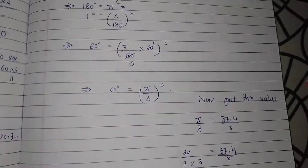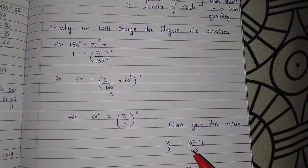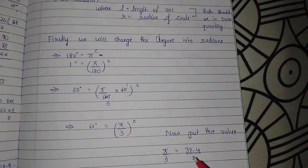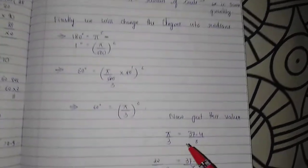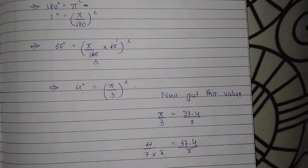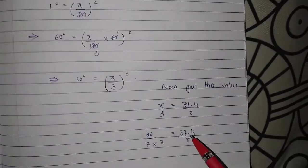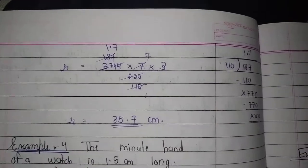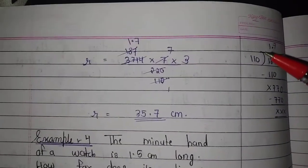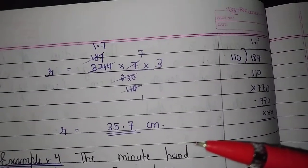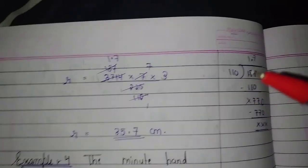Now we will put this in our formula. Theta equals pi upon 3 radians. Now we will solve for R: R equals 37.4 divided by pi over 3, which gives us 35.7 cm.